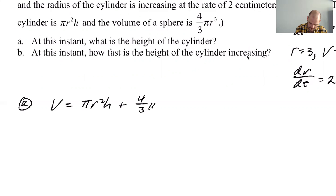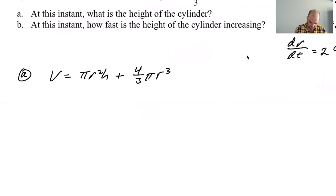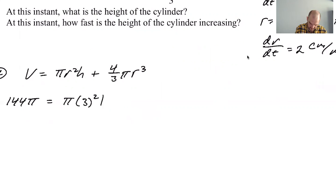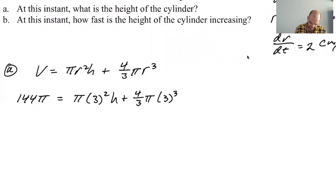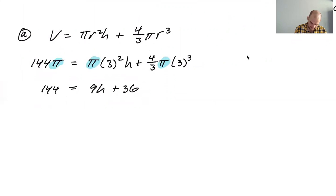So the volume in total is pi r squared h, that's the cylinder plus four thirds pi r cubed. And we are doing, this is just an algebra problem, right? I think so the volume is 144 pi equals pi times three squared h, the height we don't know, that's the whole point, plus four thirds pi three cubed.